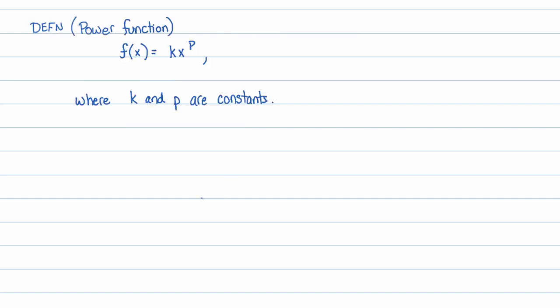Let's first look at the definition of a power function. It's just a function of the form f(x) = kx^p. Notice there's no plus or minus at the end — we're not adding 5 or anything. It's literally just k times x to the p power. k and p are considered to be constants. A simple example would be f(x) = 3x^7, which is a power function because the coefficient and the power are both constants.